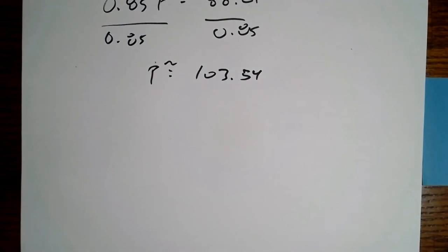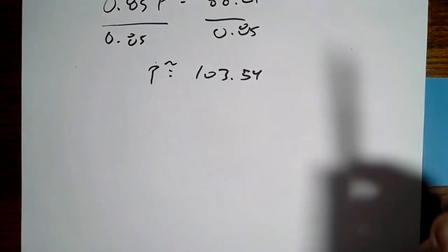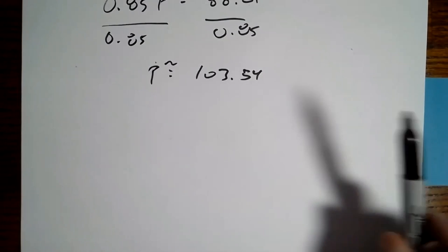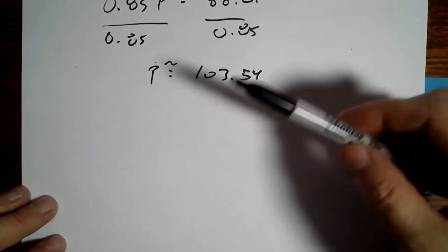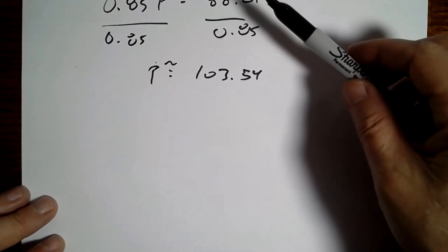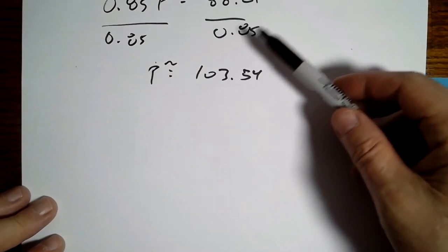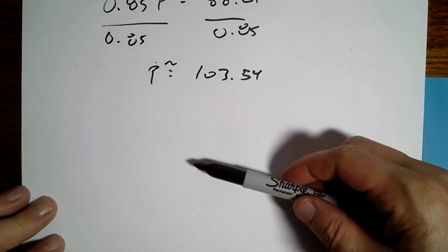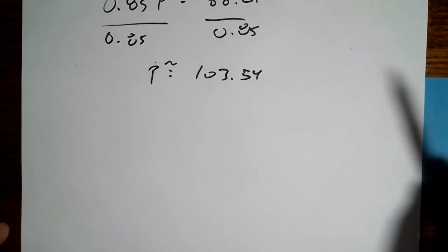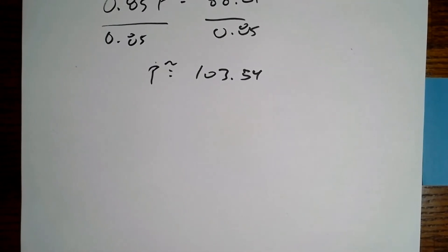For any problem with multiple steps, if you made a mistake in problem 10 and came up with, say, $97, as long as you did 0.85 × P = 97, I gave full credit. Anytime a problem builds on another, just keep using your number — I'm not going to penalize you twice. That's how you get problem 11.